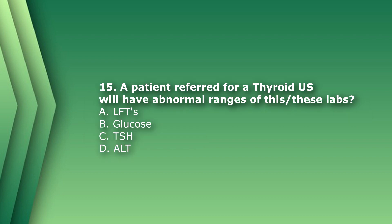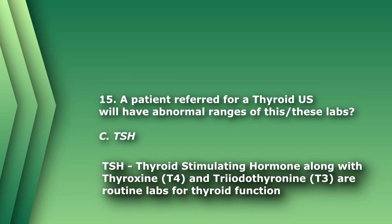Question 15: A patient referred for a thyroid ultrasound will have abnormal ranges of which labs? A) LFTs, B) glucose, C) TSH, or D) ALT. LFTs are liver function tests — not related to the thyroid. Glucose is used for measuring blood sugar and diagnosing diabetes. TSH stands for thyroid stimulating hormone — the only option with 'thyroid' in the title. ALT is also an LFT. The answer is C) TSH.